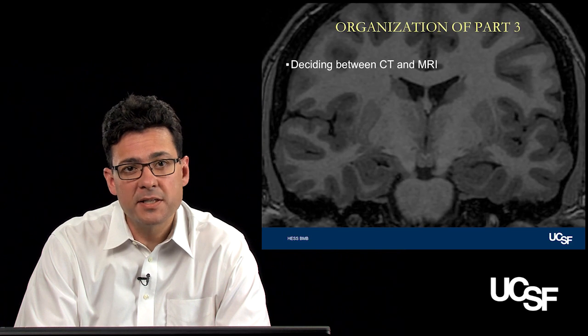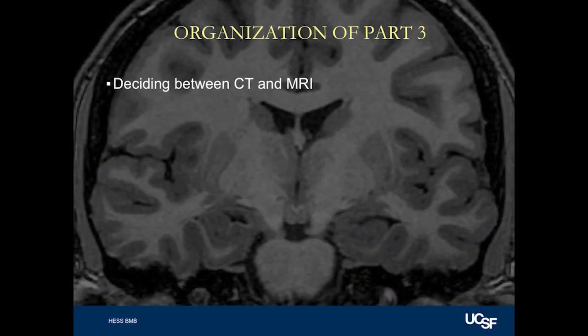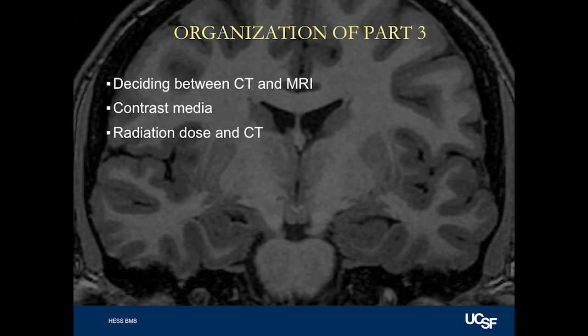Part three is organized as follows. We'll first talk about how to decide between performing a CT and an MRI examination. We'll discuss whether or not contrast media should be administered and the role of contrast media in imaging the brain. We'll also discuss radiation dose considerations with CT, which has become an important factor when patients undergo CT examinations. Finally, we'll discuss safety considerations with MRI that you should think about before ordering an MRI.